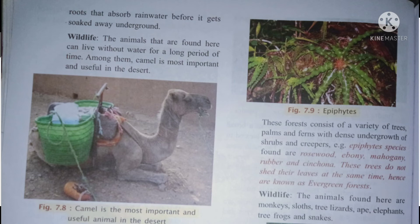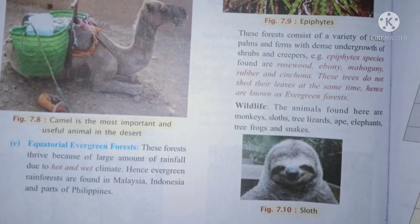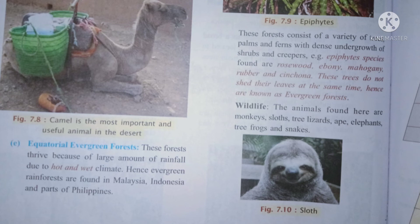Coming to the last type — the equatorial type. These equatorial forests thrive very densely. We can't enter them because of the large amount of rainfall due to the hot and wet climate. Evergreen forests are found in Malaysia, Indonesia, and parts of the Philippines. These are called equatorial evergreen forests because they do not shed their leaves all at once — that is the reason they are always green. The most important species are epiphytic species such as rosewood, ebony, rubber, and cinchona.